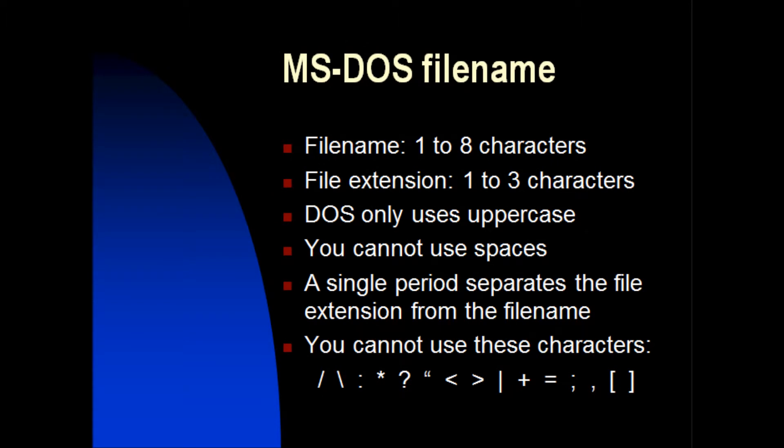DOS file names are limited to 8 characters, with a file name extension of 1 to 3 characters. DOS only uses uppercase and you cannot use spaces. A single period separates the file extension from the file name. You cannot use certain characters such as question mark, asterisk, semicolon, etc.